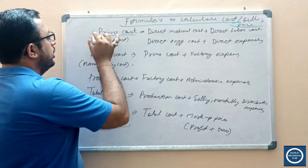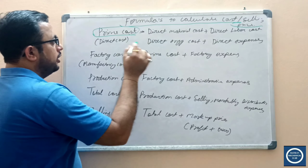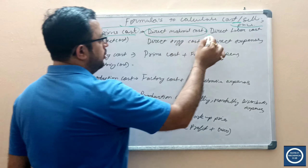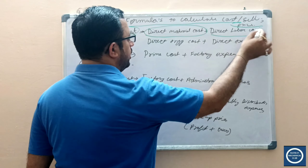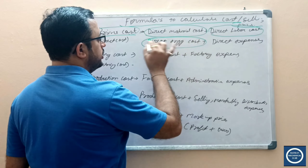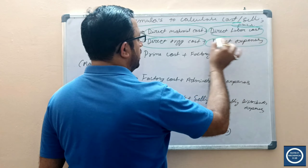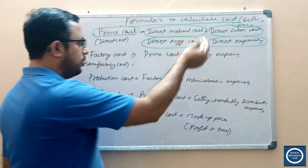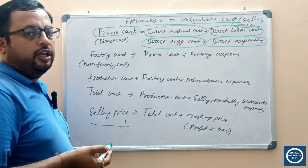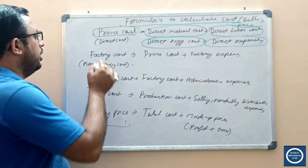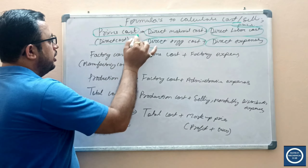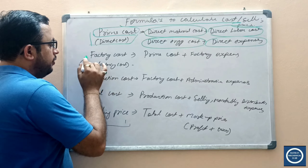First, we will calculate the prime cost. Prime cost is basically the sum of your direct material cost, plus direct labor cost, plus direct engineering cost, and direct expenses. These will all be given in your question. Prime cost is also known as your direct cost.